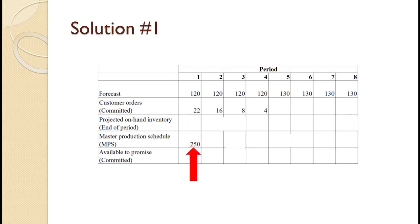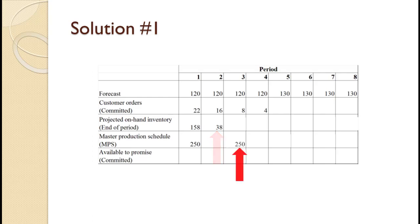We have beginning inventory of 28 and need 120, so we must schedule production of the lot size of 250. Note: if the committed order size for any period exceeds the forecast, you use the committed order size in place of the forecast. Beginning inventory of 28 plus production of 250 minus the forecast of 120 equals 158. For period 2, we have beginning inventory of 158 and only need 120, so no production is needed: 158 minus 120 equals 38. For period 3, beginning inventory of 38 and need 120, so we schedule production of 250: 38 plus 250 minus 120 equals 168. For period 4, beginning inventory of 168 and only need 120, so no production is needed: 168 minus 120 equals 48.